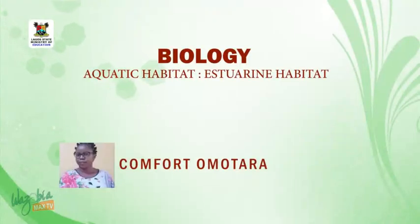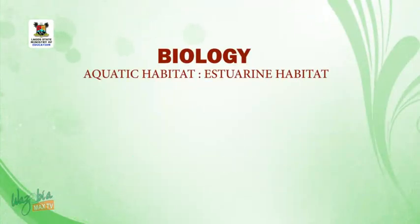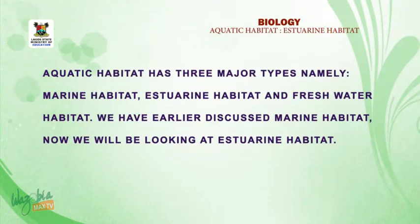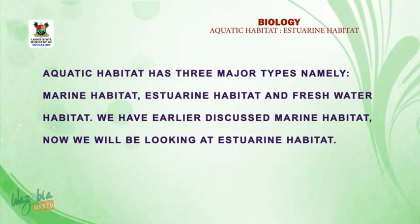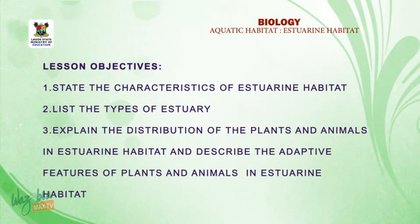Good day students, welcome to today's class. I'll be your biology teacher. The topic is estuarine habitat. Under aquatic habitat, there are three major types: marine habitat, estuarine habitat, and freshwater habitat. We have earlier discussed marine habitats. Now we'll be looking at estuarine habitats. Lesson objectives: at the end of the lesson, students should be able to...